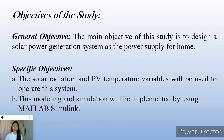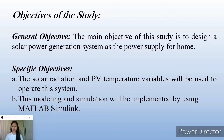These are the objectives of the study. For the general objective, the main objective of this study is to design a solar power generation system as the power supply for home. For specific objectives, the solar radiation and PV temperature variables will be used to operate this system. This modeling and simulation will be implemented using MATLAB Simulink.